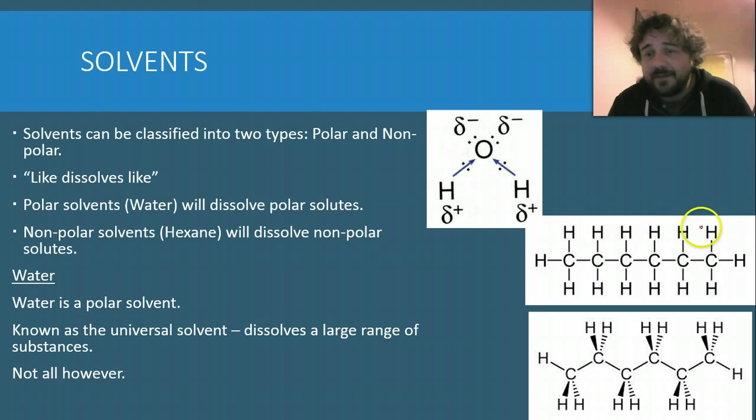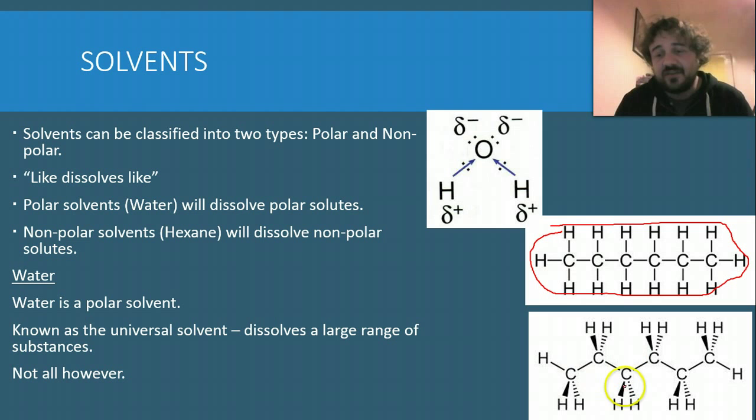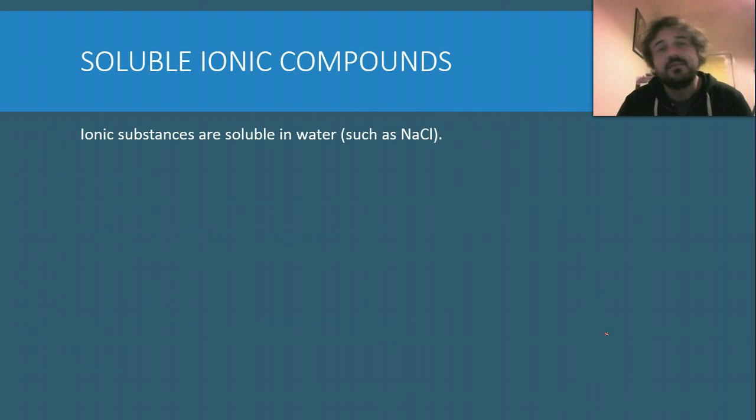Hexane, if you have a look at it, even if this was all oxygens, which are super electronegative compared to the hydrogen, even if that was the case, this universal covering all the way around would stop it from being polar. It would have the same charge all the way around the outside. And we see here with the 3D structure, it's just uniform all the way around. So that's what makes hexane non-polar.